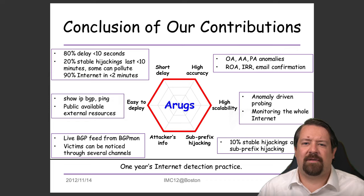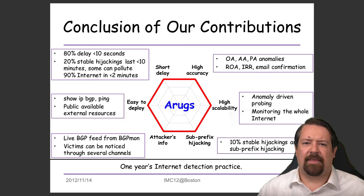In conclusion, Argus achieves a number of design goals including short delay to detection and identification, high accuracy, high scalability, detection of sub-prefix hijacking, and relative ease of deployment. That wraps up our overview of BGP prefix hijacking and the Argus detection system in particular. We hope that was helpful and we'll see you on the next one.